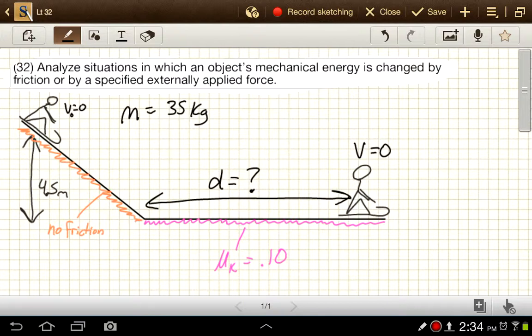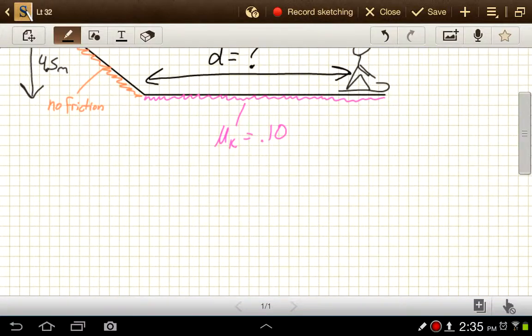So we know that energy has to be conserved in this problem, we just have to figure out where it's gone. Well, that energy that this kid is losing can only happen if there is work being done on that kid, and so in that case we know that the net work done on the kid is equal to the change in energy.